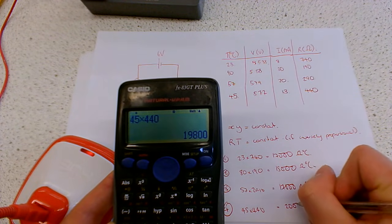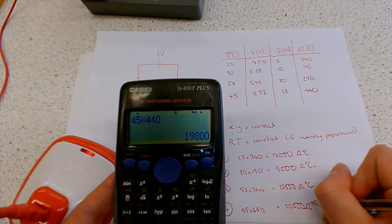And then forty-five times four hundred and forty. So that would be twenty thousand ohm degrees Celsius.